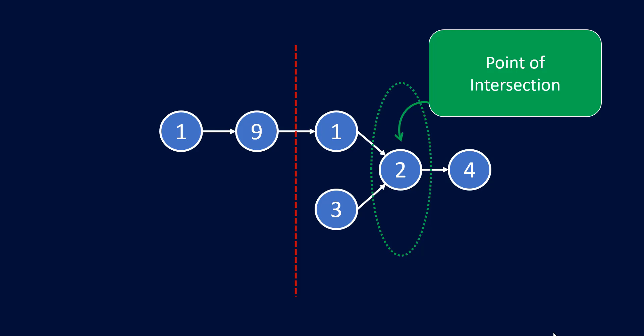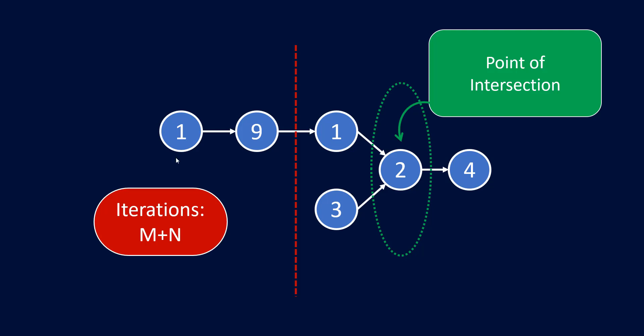So the effective number of iterations in this approach is M plus N — first we find the lengths, then we skip and iterate to the intersection node. So now let's go ahead and code it out.